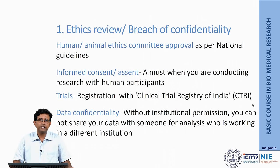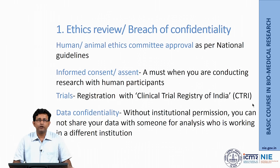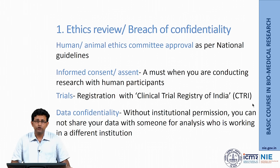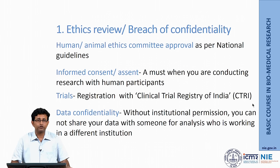The first component is ethics review and breach of confidentiality. When planning for research, you must take the human and/or animal ethics committee approval, whichever is applicable as per national guidelines. You must also take informed consent or age-appropriate assent whenever required. Unless you have these two, none of the journals will accept your manuscript.